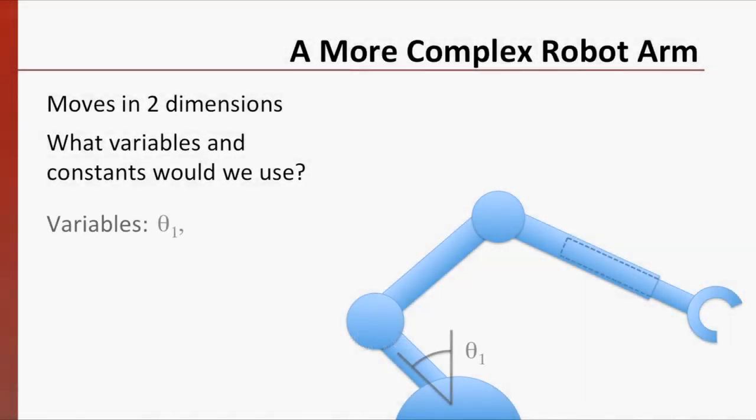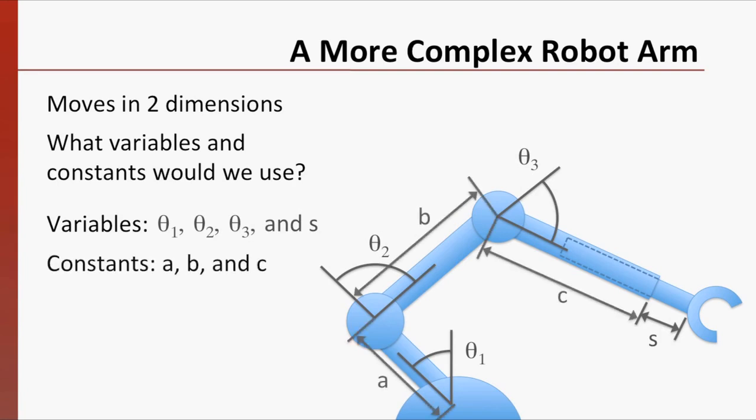There are three separate angles that must be recorded, as well as the extension of the arm. There are also three pieces of constant length.